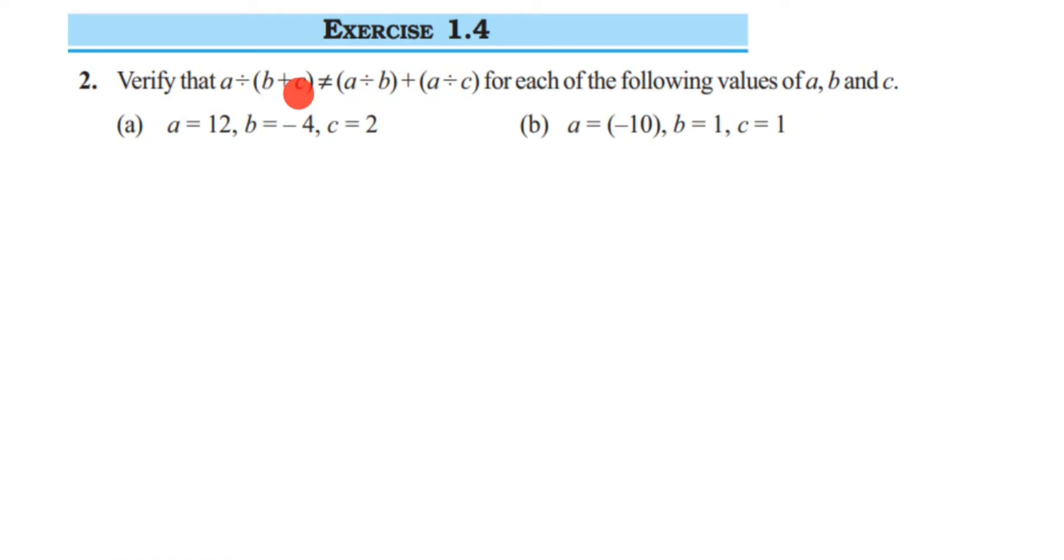So the first question: a value is 12, b value is -4, c is 2. I'm going to take the LHS part. So LHS we have a÷(b+c). I'm going to simply substitute the values here. a is 12 divided by b value is -4 plus c value is 2.